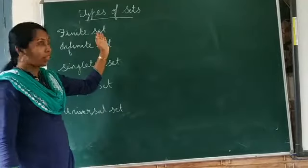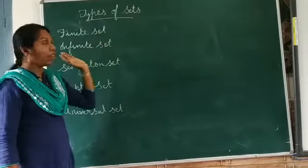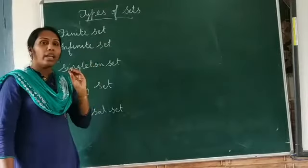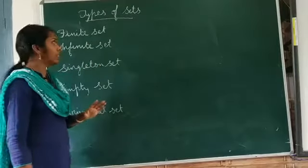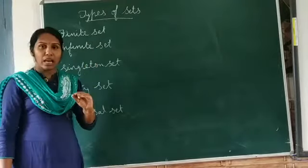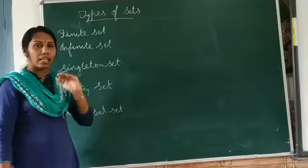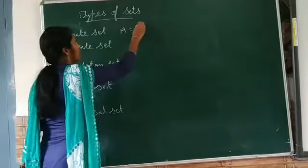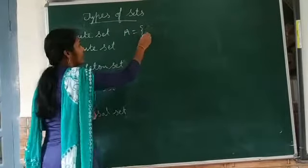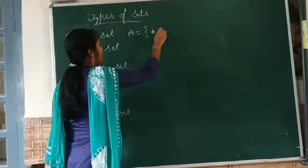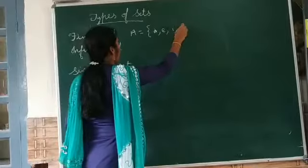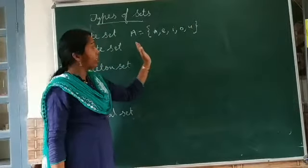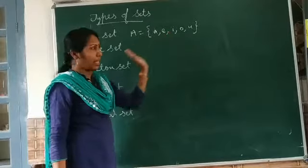First of all, let us see what is a finite set. A finite set contains only a limited number of elements. If the number of elements are limited in a set, we can say that that set is a finite set. For example, A is equal to the set {A, E, I, O, U}. Since the number of elements are limited, therefore we can say that it is a finite set.